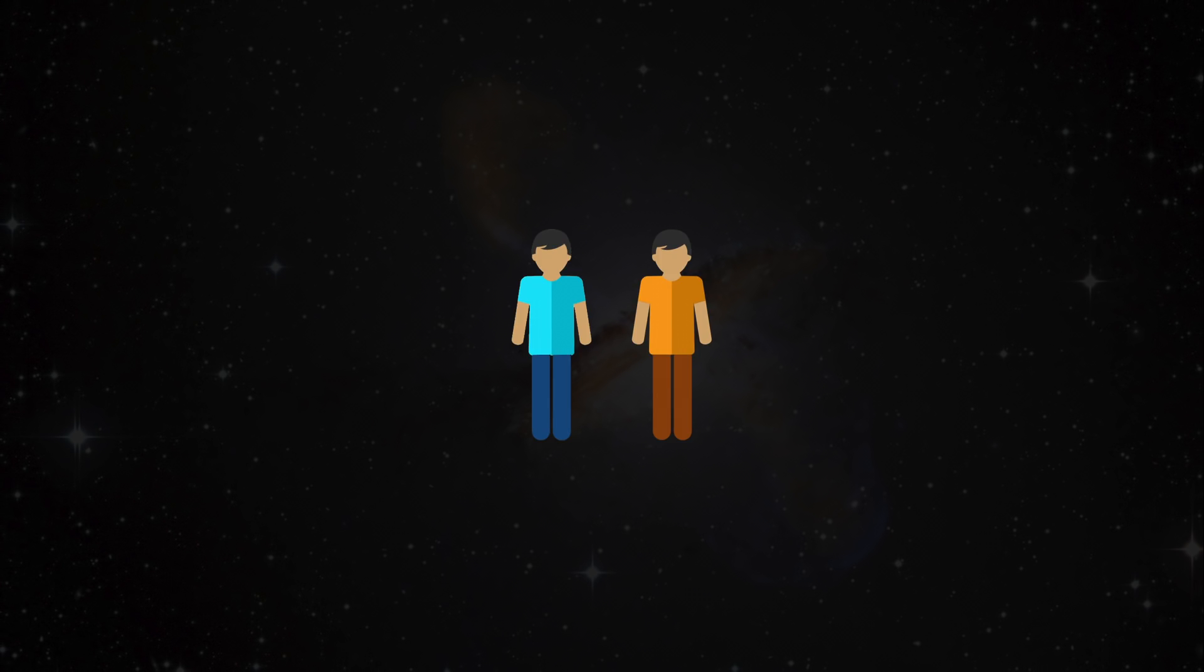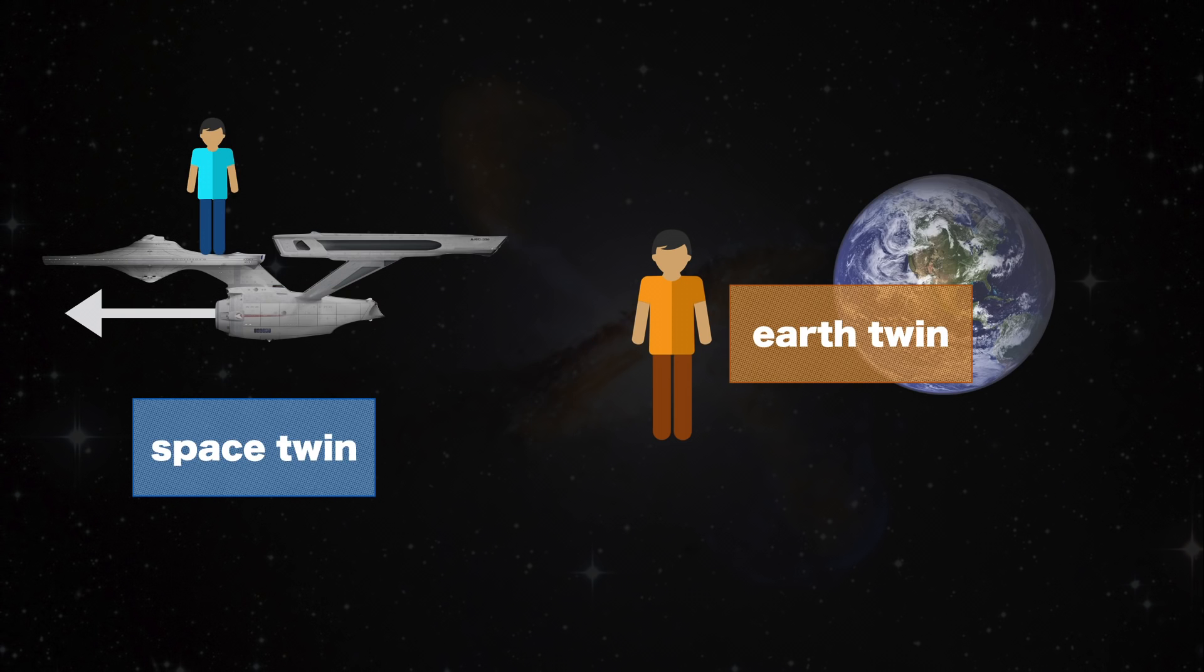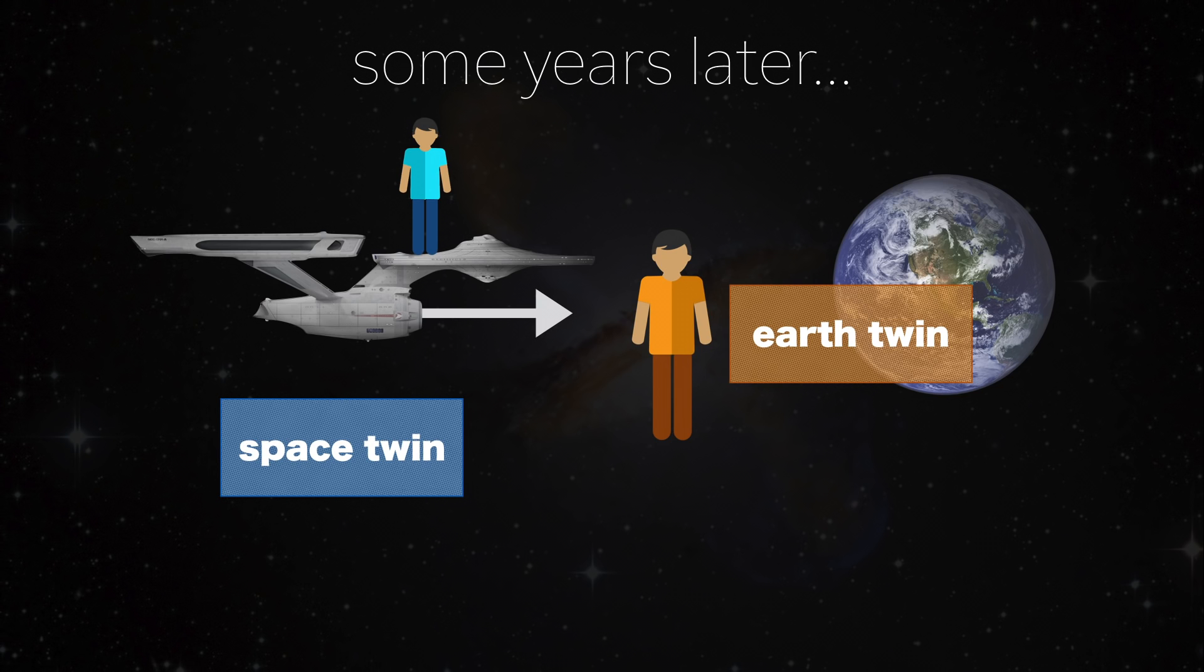Imagine two twins. Let's call them Space Twin and Earth Twin. Space Twin travels away from Earth at very high speed and returns some years later.